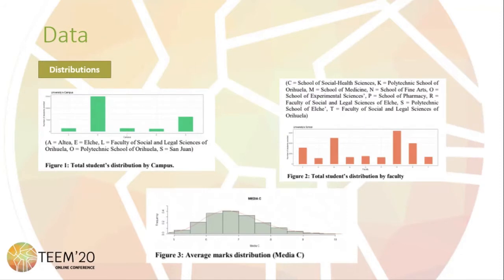As you can see, where there are more students is in the campus of ELTE. In total, there are four campuses. The faculty with more students is the Faculty of Social and Liberal Sciences of ELTE, out of nine faculties. The average mark is between 6.5 and 7.